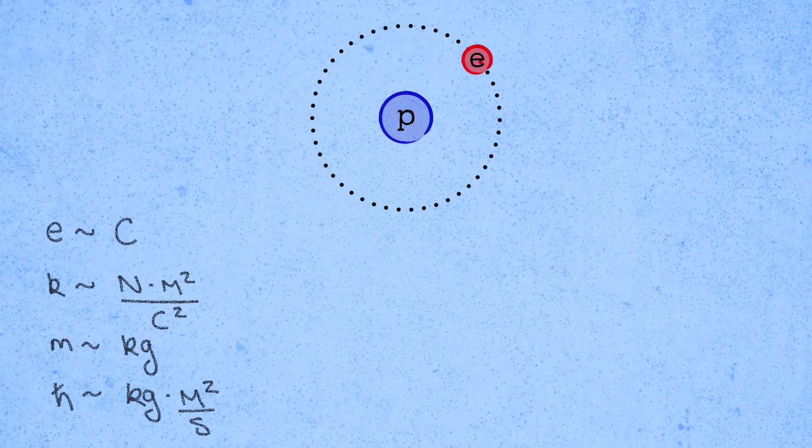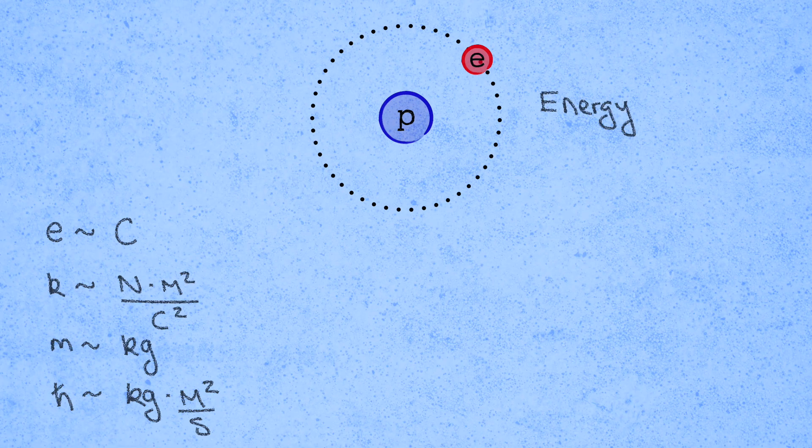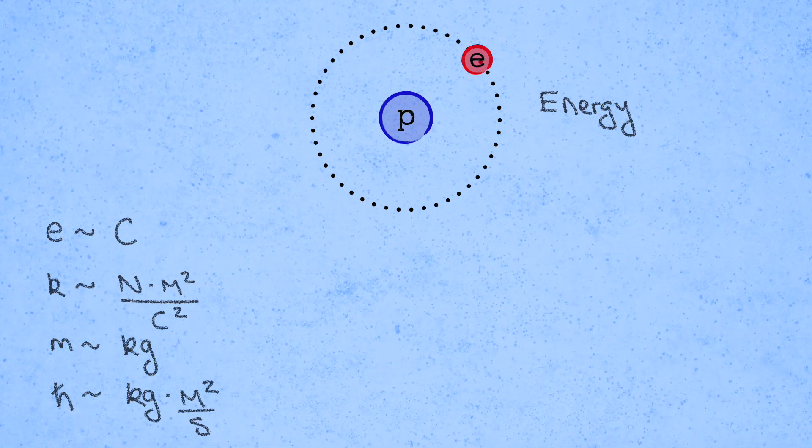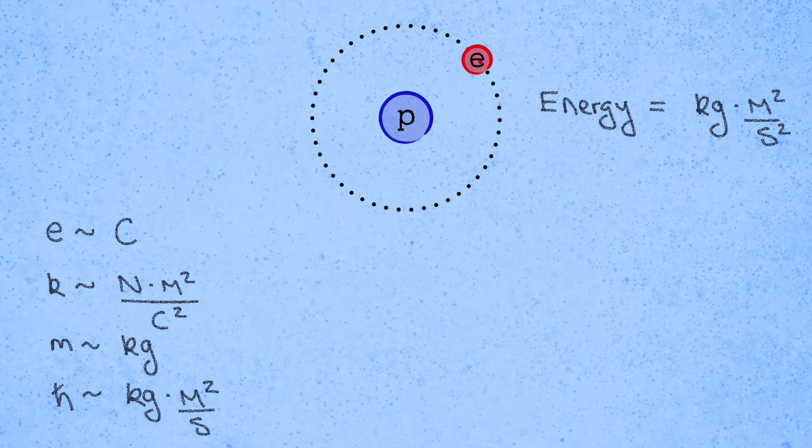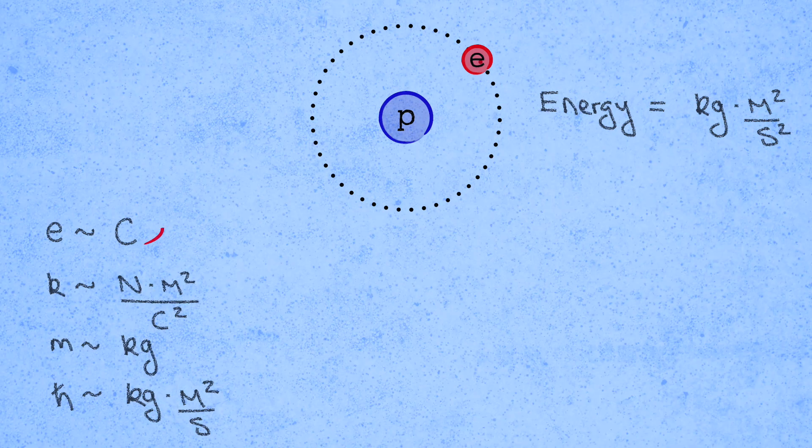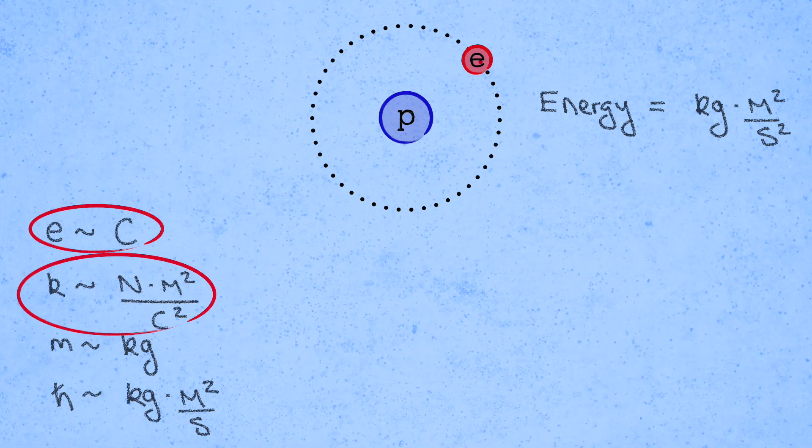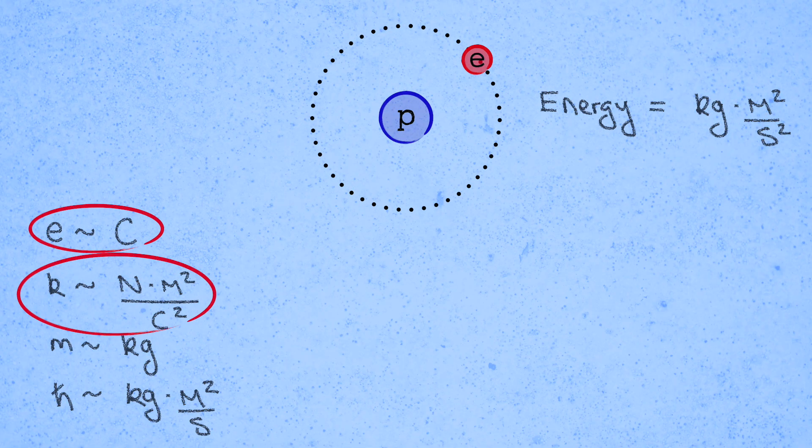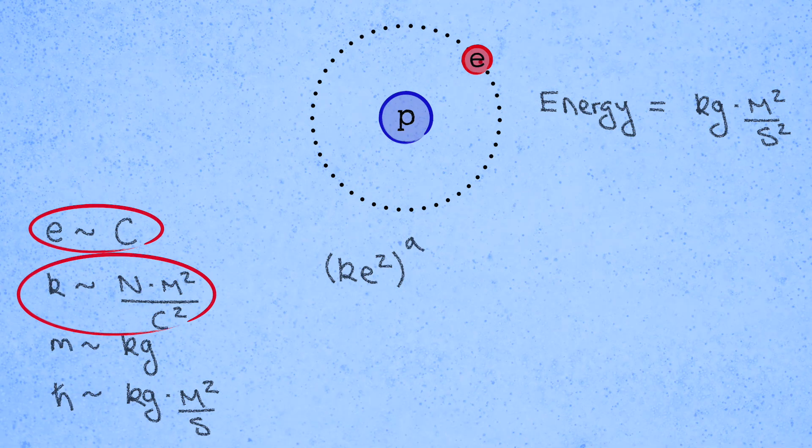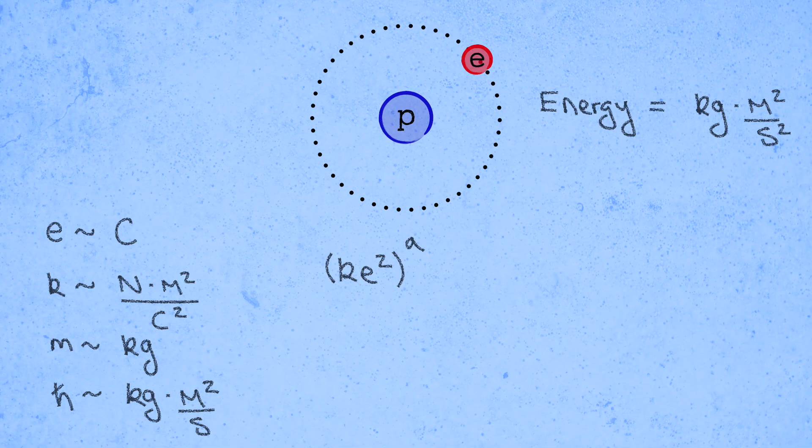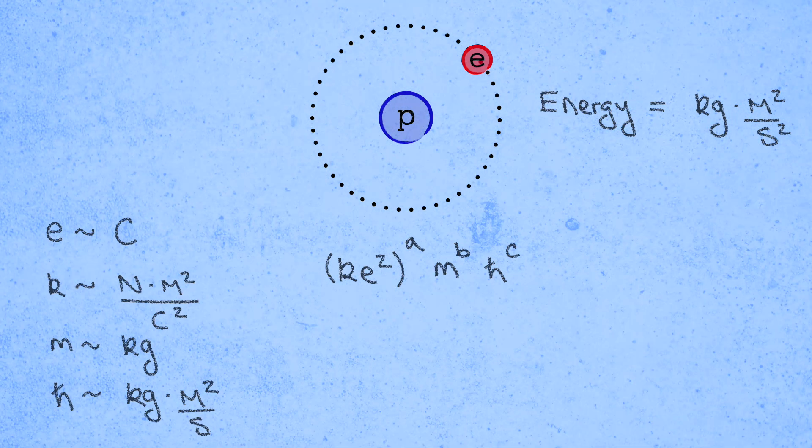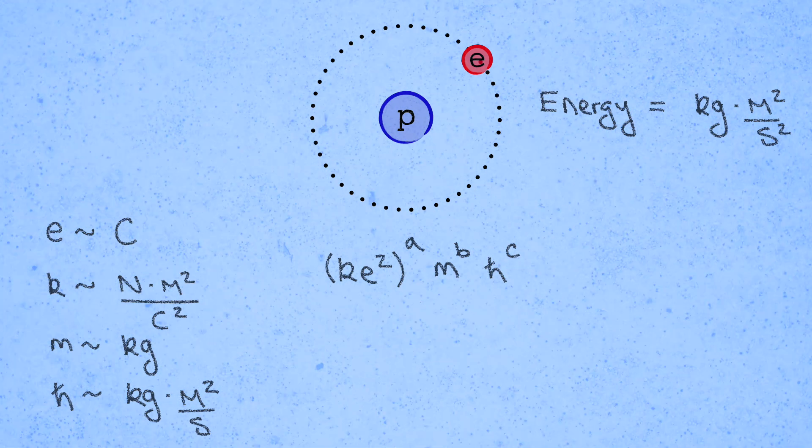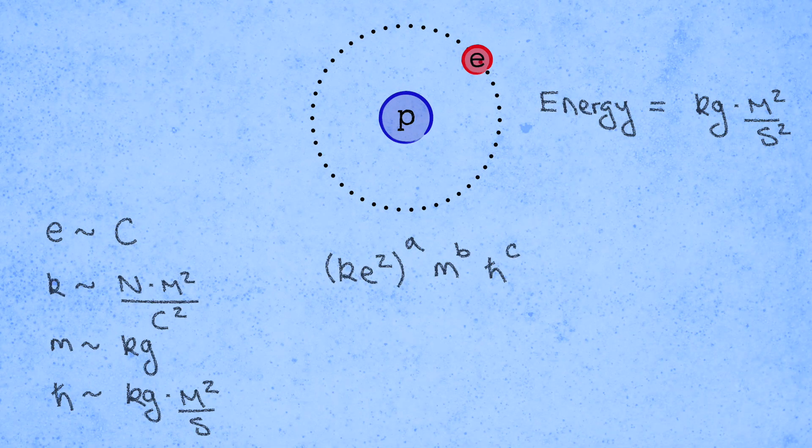Again, the question was to figure out the binding energy of the atom. So we want to combine these quantities to get units of kilograms meters squared per second squared. The first thing to notice is that we need to cancel out the units of coulombs, which means that k and e have to enter in the combination ke squared, raised to some power, call it a. Then we can add on m to the b and h-bar to the c. Now it's just a little exercise to figure out what a, b, and c have to be in order to get units of energy out of this expression.